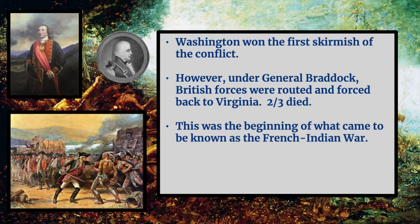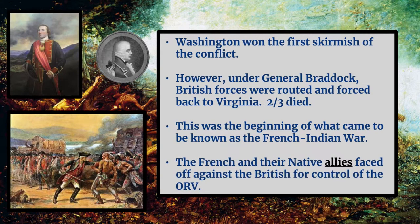These events became the beginning of what we know as the French-Indian War — though it was the French and Native Americans, or Indigenous people, against the British, not the British. It was also known as the Seven Years' War, which actually lasted nine years. The French and their native allies faced off against the British for control of the Ohio River Valley. At first, the French did very well because their battle tactics made more sense given the terrain, whereas the British tactics of wearing bright red uniforms and marching in rows — as done in Europe — initially did not work out.